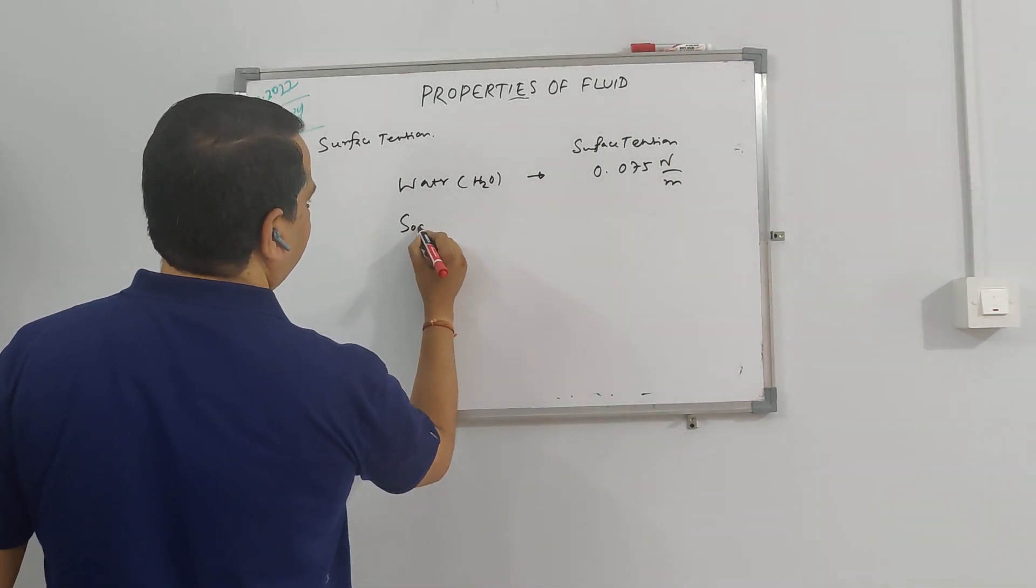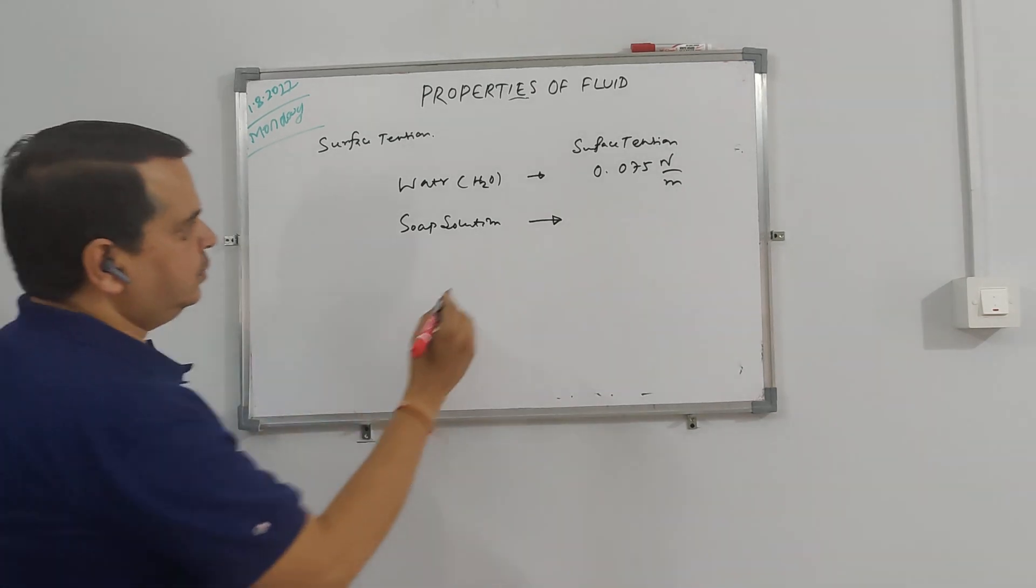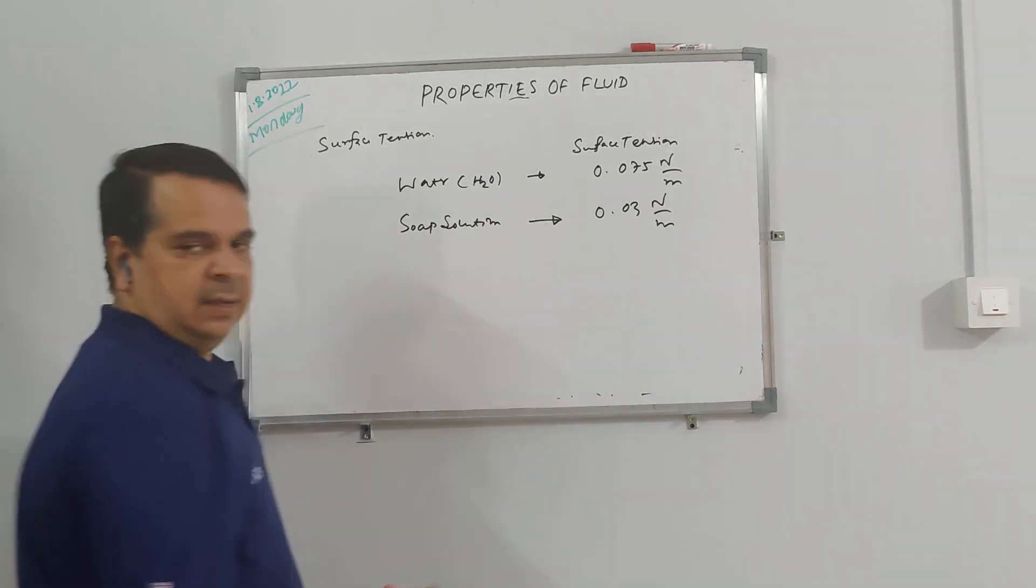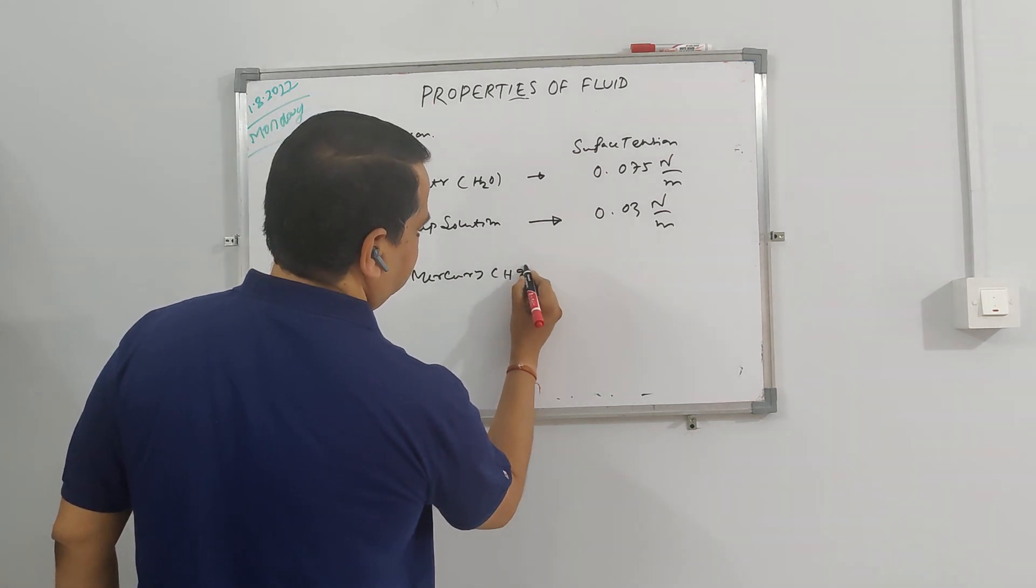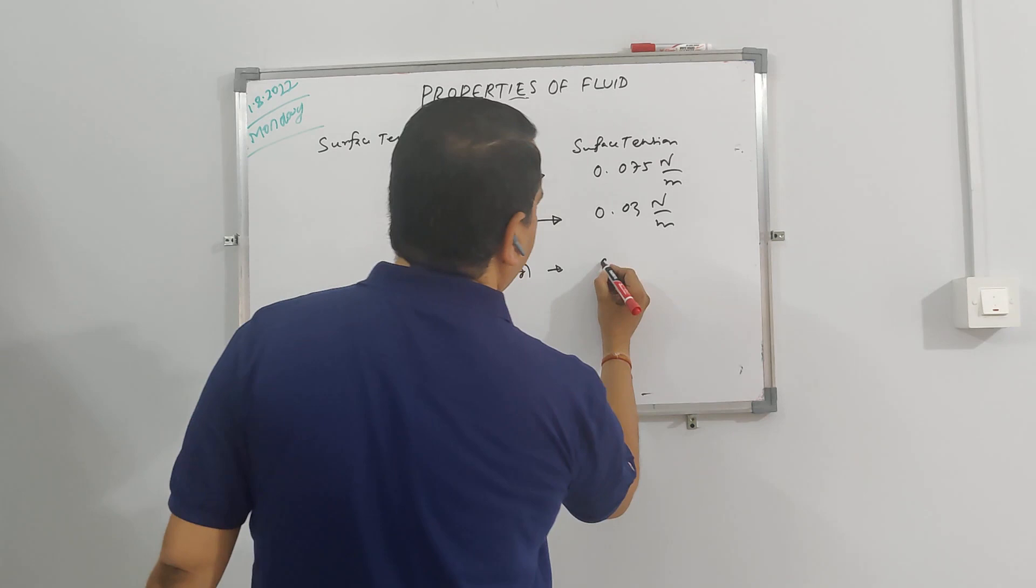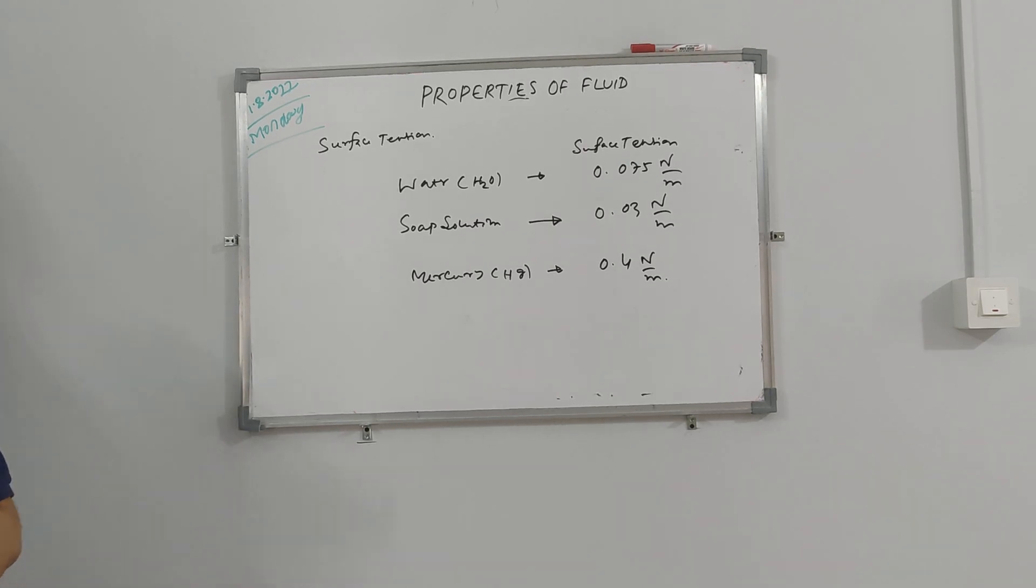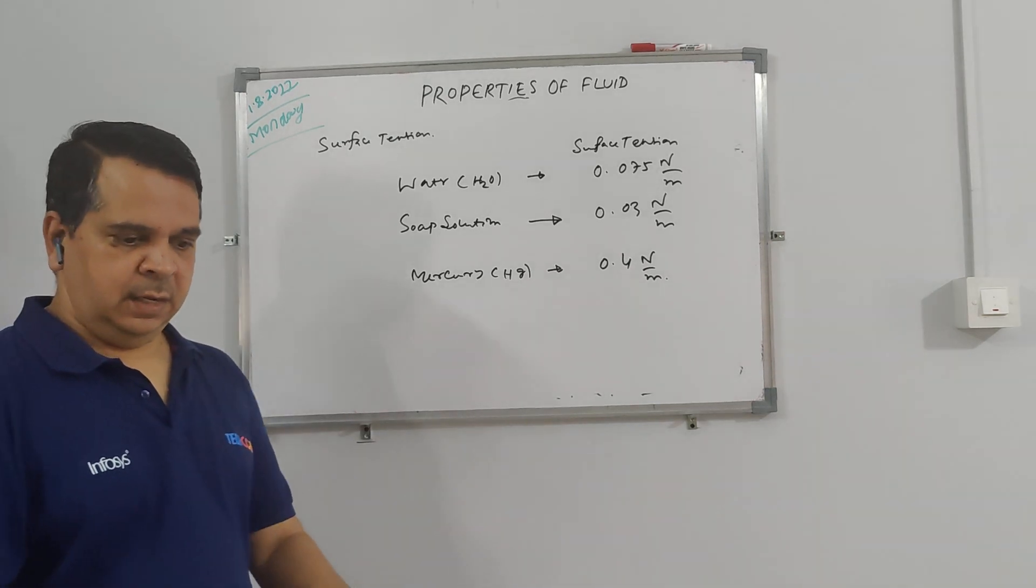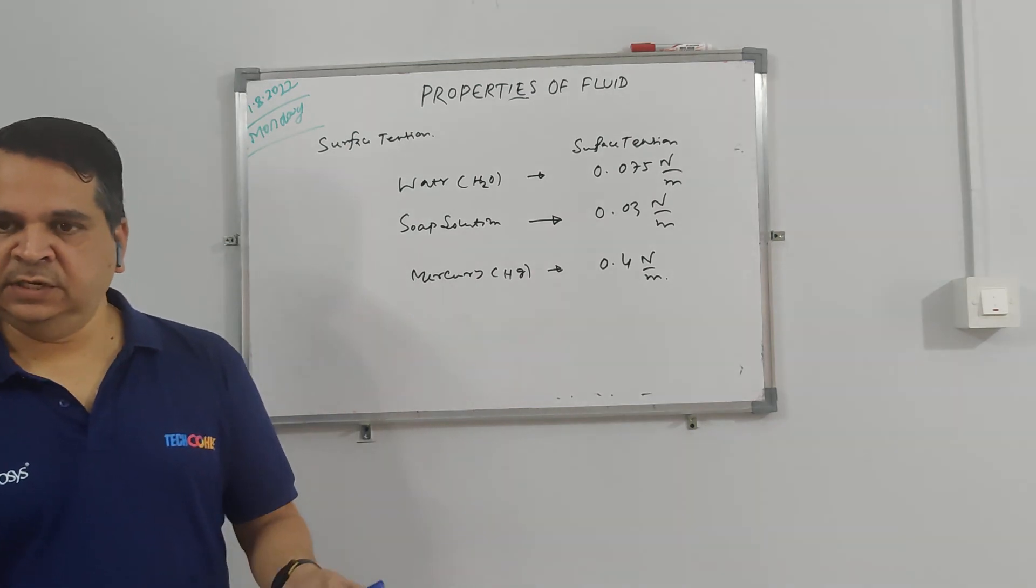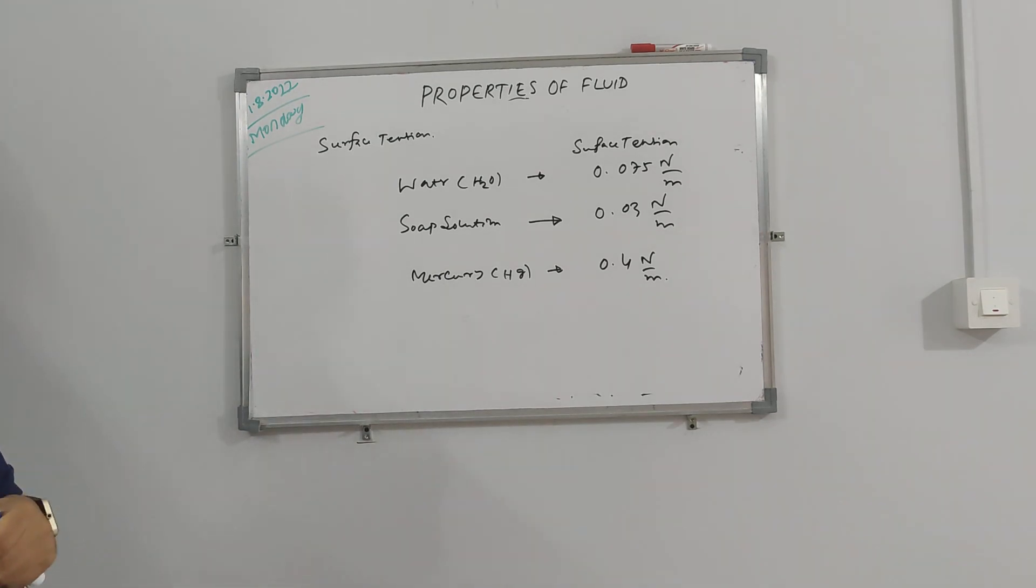Similarly, the soap solution surface tension is 0.03, almost half, and mercury surface tension value is 0.4, almost 10 times. That means mercury has 10 times more surface tension or cohesive force as compared to water. That's why the intermolecular force between the mercury molecules are very high. If you drop mercury, it will not spread, it will not wet the surface. Instead, it will behave like a solid ball kind of thing because there is a lot of cohesive force.